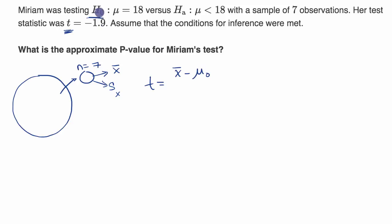minus the assumed mean from the null hypothesis, that's what we have over here, divided by our approximation of the standard error of the mean. And the way we get that approximation, we take our sample standard deviation and divide it by the square root of our sample size.